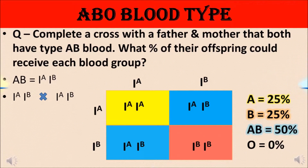Let's understand ABO blood type co-dominance by solving a problem. The question is: complete a cross where both father and mother have AB blood group. What percentage of their offspring could receive each blood group? For AB blood group, the alleles will be I^A I^B.